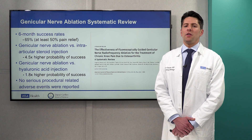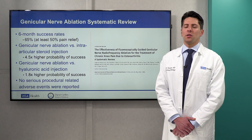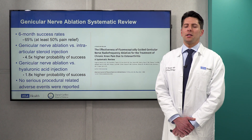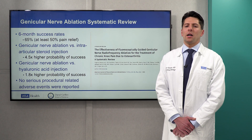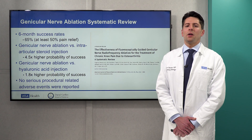A systematic review including 453 patients found that at six months, 65% of patients had clinical success defined as at least 50% pain relief. Geniculate nerve ablation had a 4.5 times higher probability of success compared to intra-articular steroid injection and a 1.8 times higher probability of success compared to HLA injection. Importantly, there were no serious procedural-related adverse events reported in any of the patients.